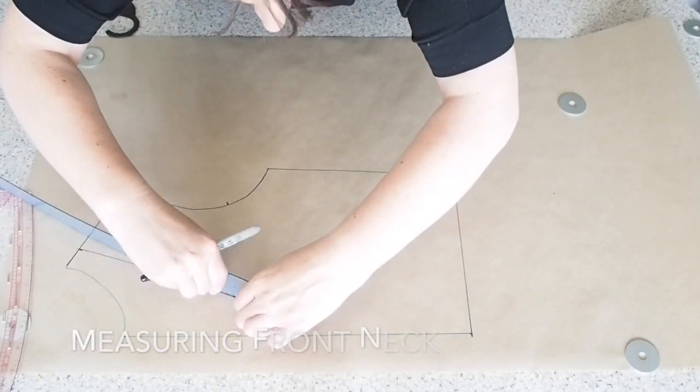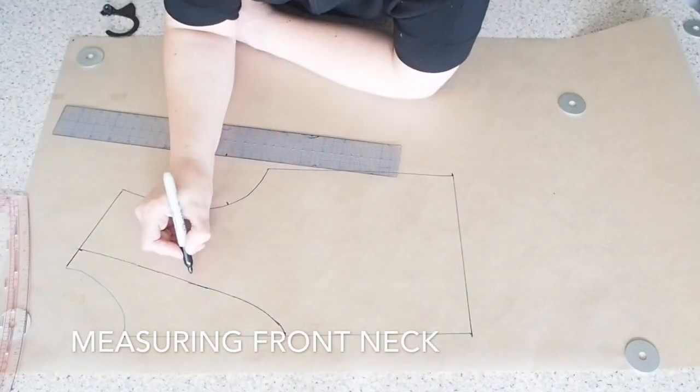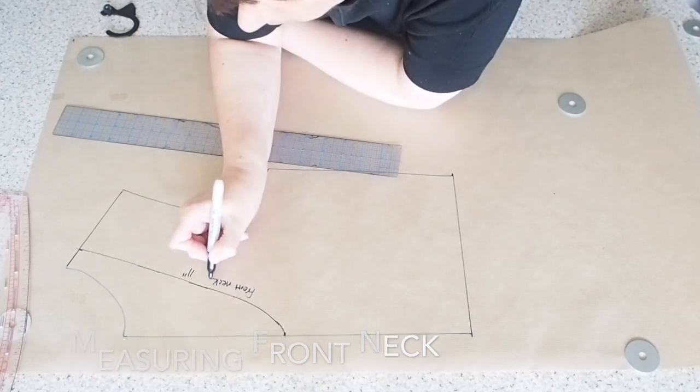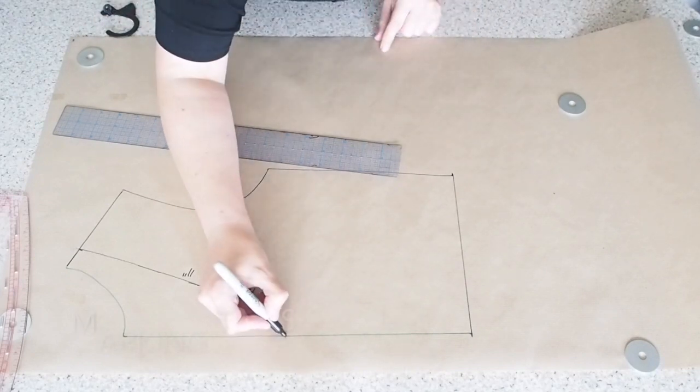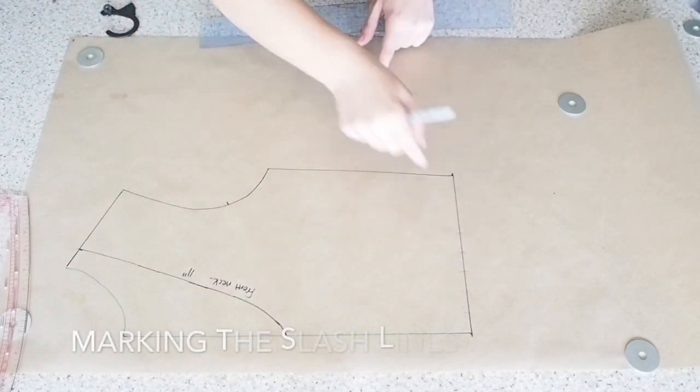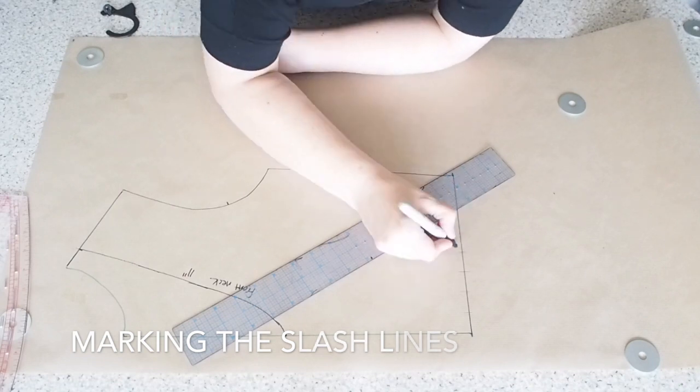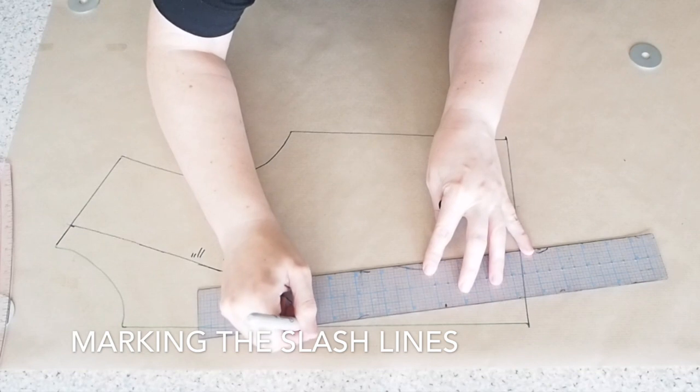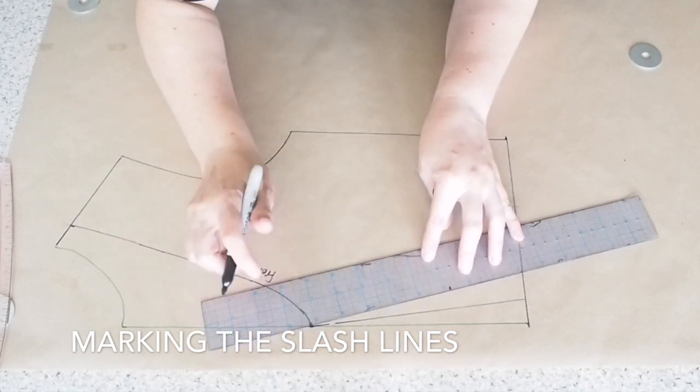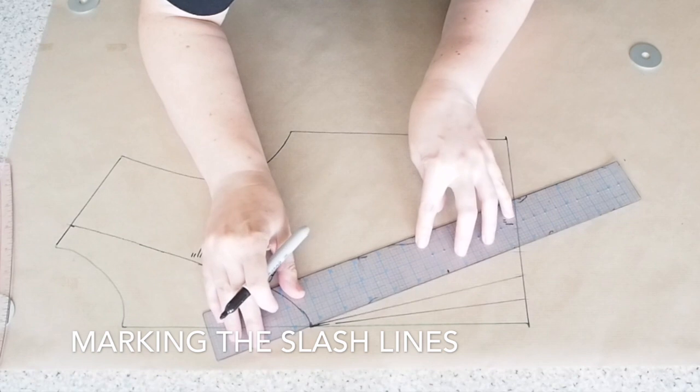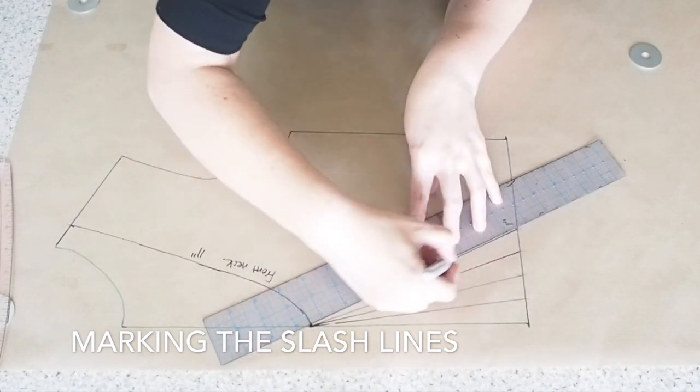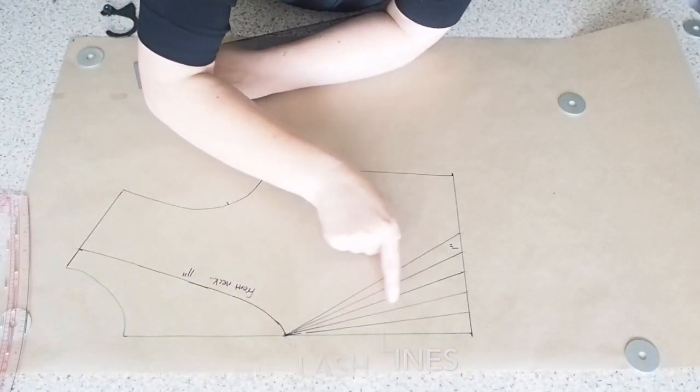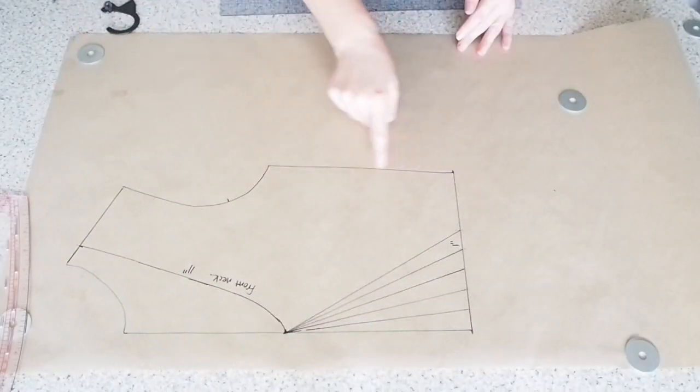And doing the same here as I did on the back. So I'm just measuring the new neckline. And as I mentioned I'll need that measurement later on. And now I want to give myself a little bit more fabric here, just at the bottom of the neck, in order to create the twist. So to do that I'm using the slash and spread method. So I've marked a dot right at the bottom of the neckline. And I'm drawing slash lines to the waistline. And these lines are one inch apart.